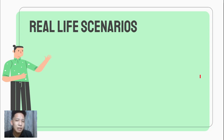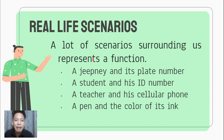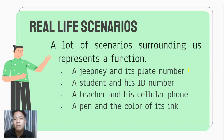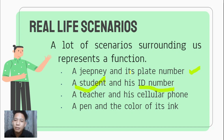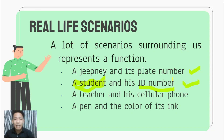There are many real-life scenarios where functions are illustrated. For example, a jeepney and its plate number — no two jeepneys should have the same plate number, so that's one-to-one and represents a function. Next, a student and his ID number — one student should have one ID number, so this also represents a function. No student has three different ID numbers.